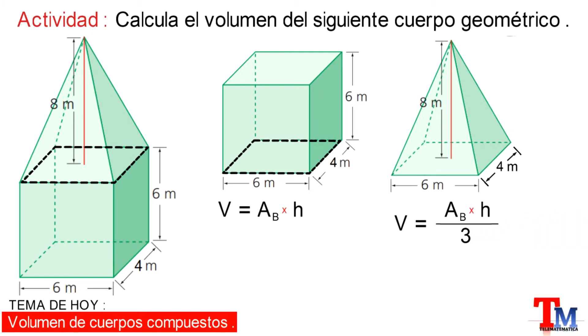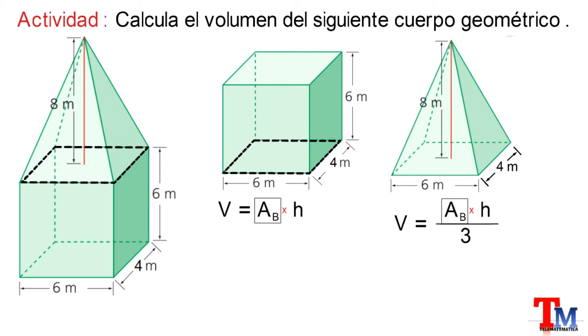Luego, podemos calcular el área de la base de ambos cuerpos geométricos que va a ser la misma. Y en este caso, como es un rectángulo, la fórmula a utilizar es el producto entre 6 metros por 4 metros. Y resolviendo la operación, esto va a ser igual a 24 metros al cuadrado.